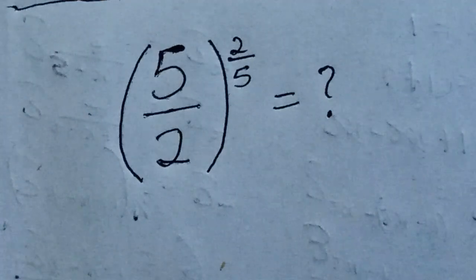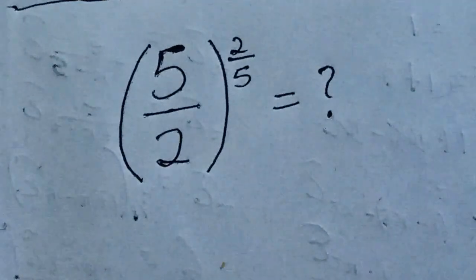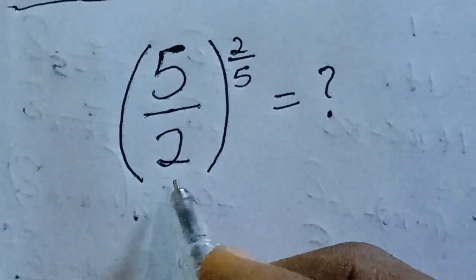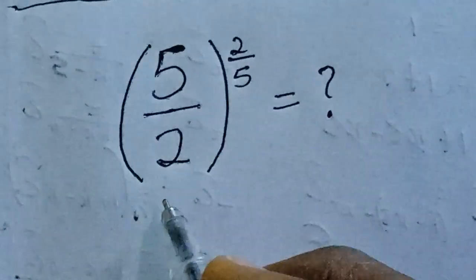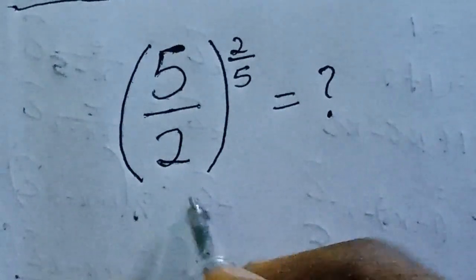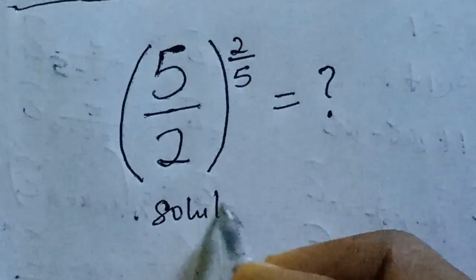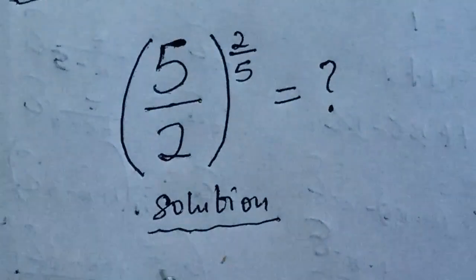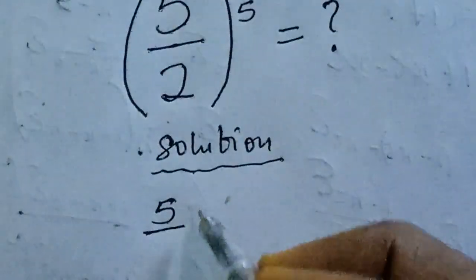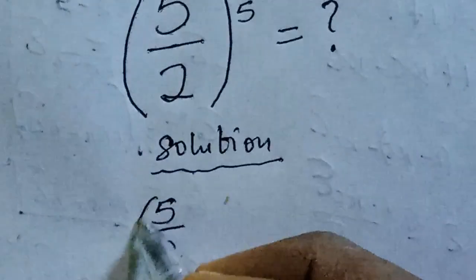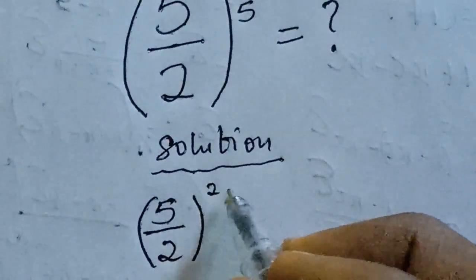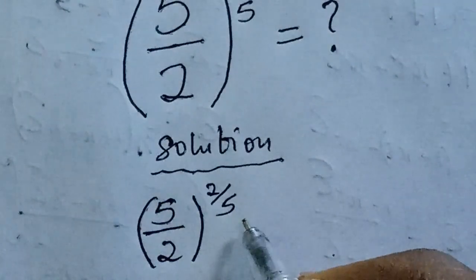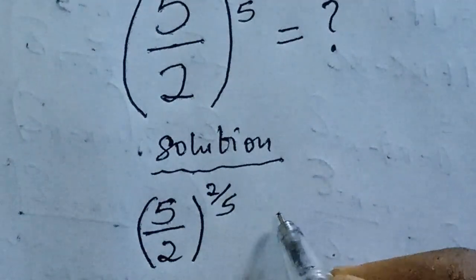Hi everyone, let's simplify this expression. So what is the simplification of this expression? How do we simplify this? First solution: we have five over two into bracket raised to power two over five. We can approach this using an identity.